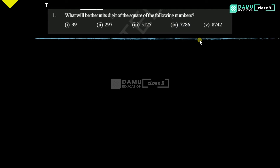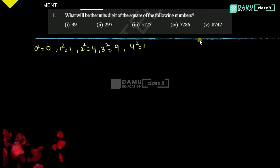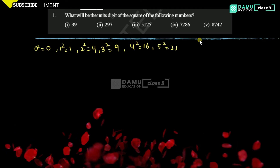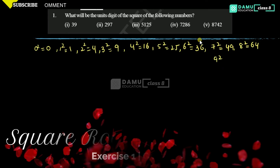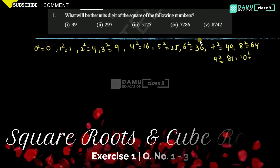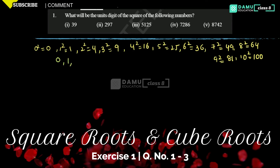The unit digits of the square of any number will be: 0 squared = 0, 1 squared = 1, 2 squared = 4, 3 squared = 9, 4 squared = 16, 5 squared = 25, 6 squared = 36, 7 squared = 49, 8 squared = 64, 9 squared = 81, 10 squared = 100. So the unit digits are: 0, 1, 4, 6, 9.